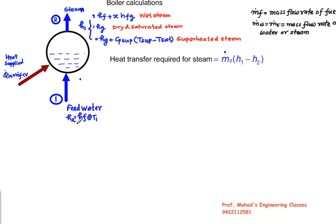Feed water is supplied at temperature T2, so H2 will be equals to HF at T1. Steam form may be wet steam, dry steam, or superheated. If it is a wet steam, then H1 will be equals to HF plus XHFG. Dry and saturated will be HG, and superheated it will be HG plus Cp soup T soup minus T sat.